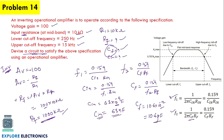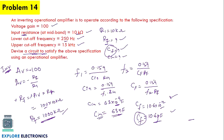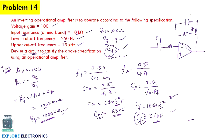Pico means 10⁻¹², nano means 10⁻⁹. This is how we design the circuit. In the final circuit, the amplifier has R1 at the input with Cin, feedback resistance Rf, and feedback capacitor Cf. Placing these calculated component values gives a gain of 100 with the specified bandwidth.